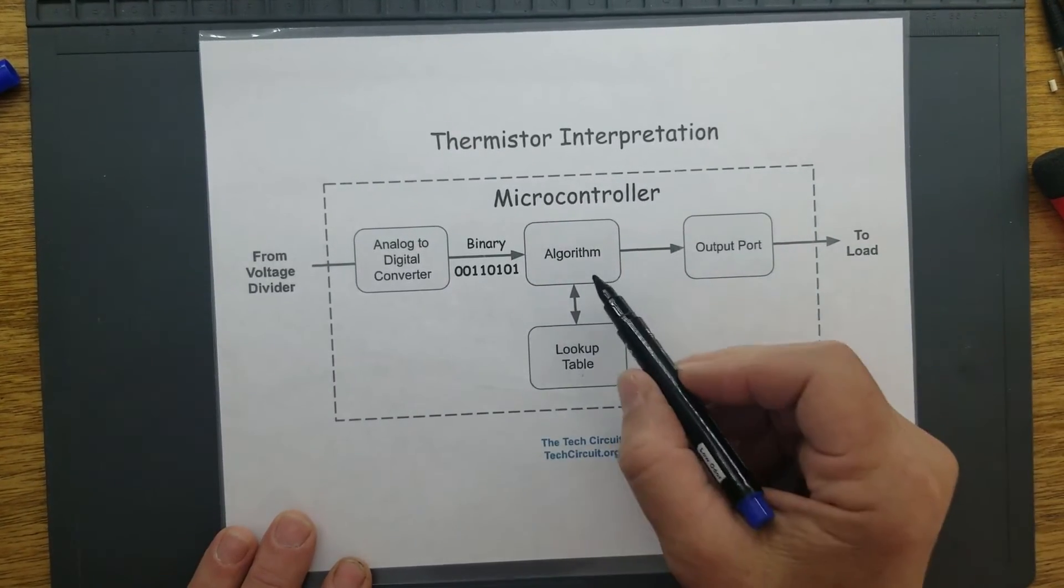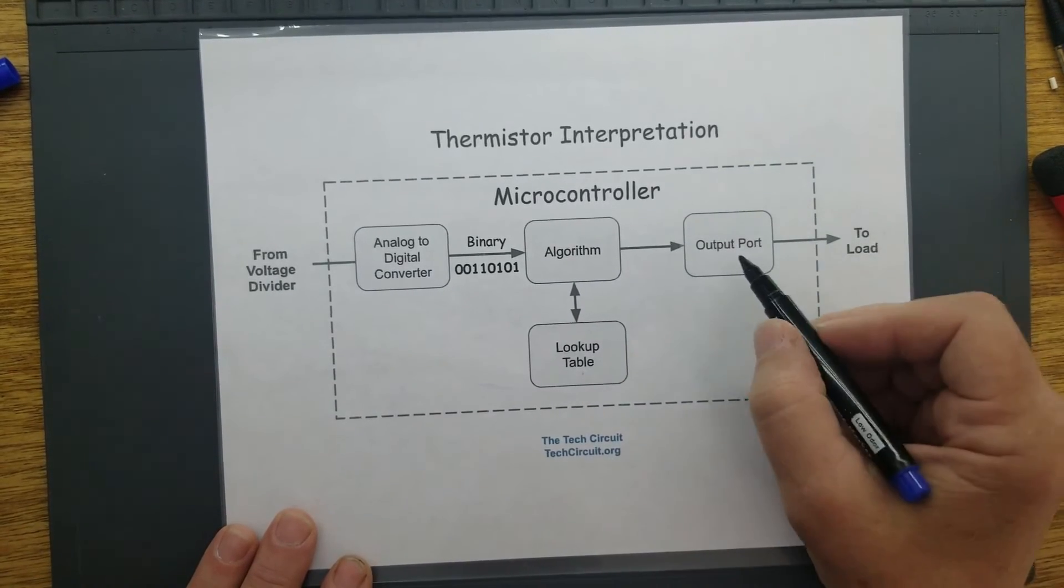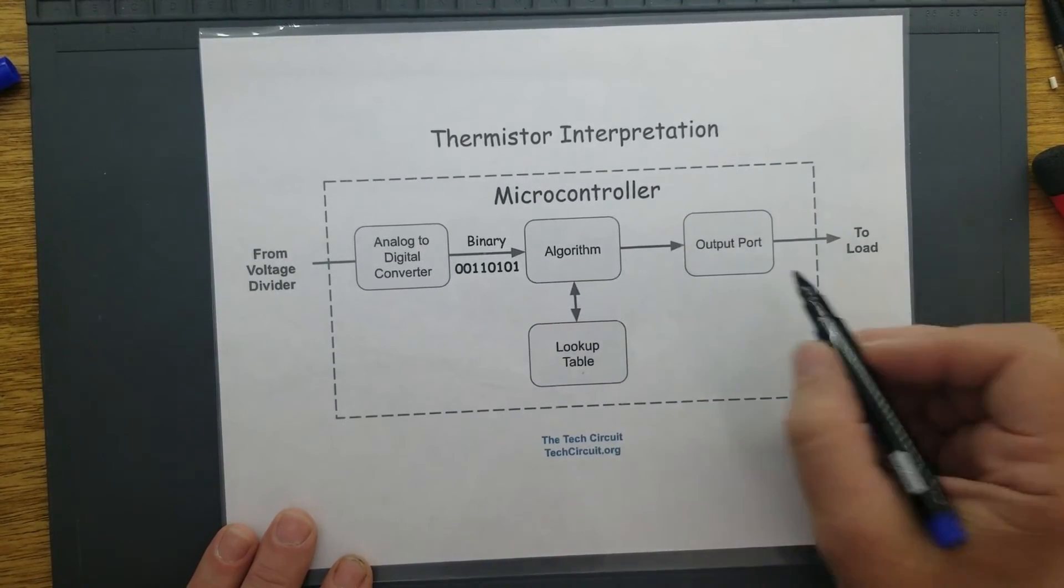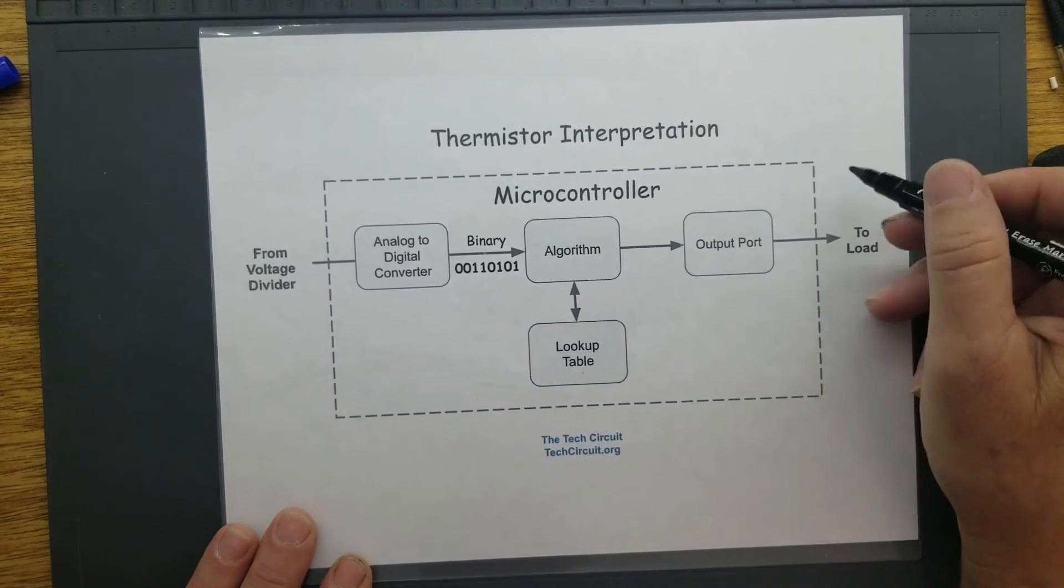Where in the case of the oven sensor, it might send a signal to the output port to turn the bake element on by sending a voltage to the relay for that bake element.